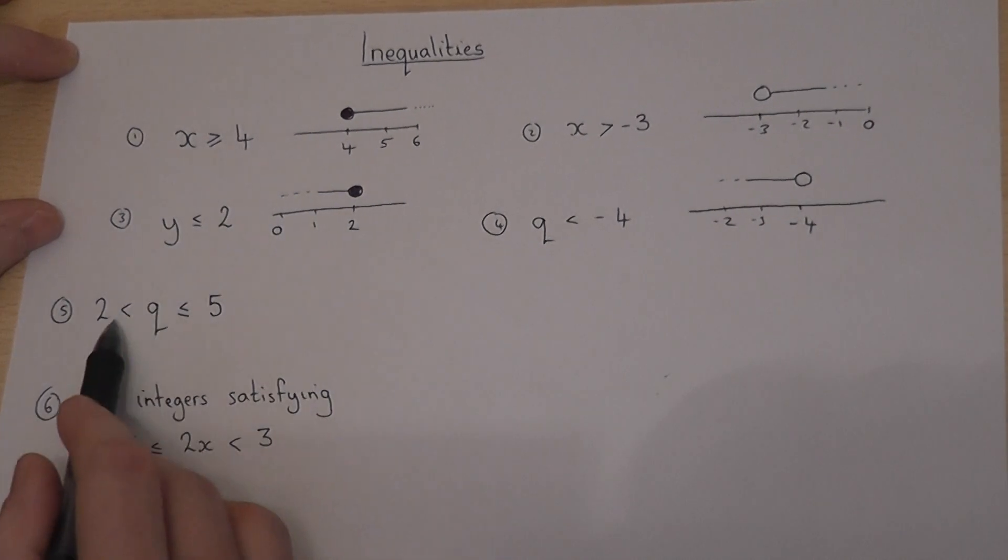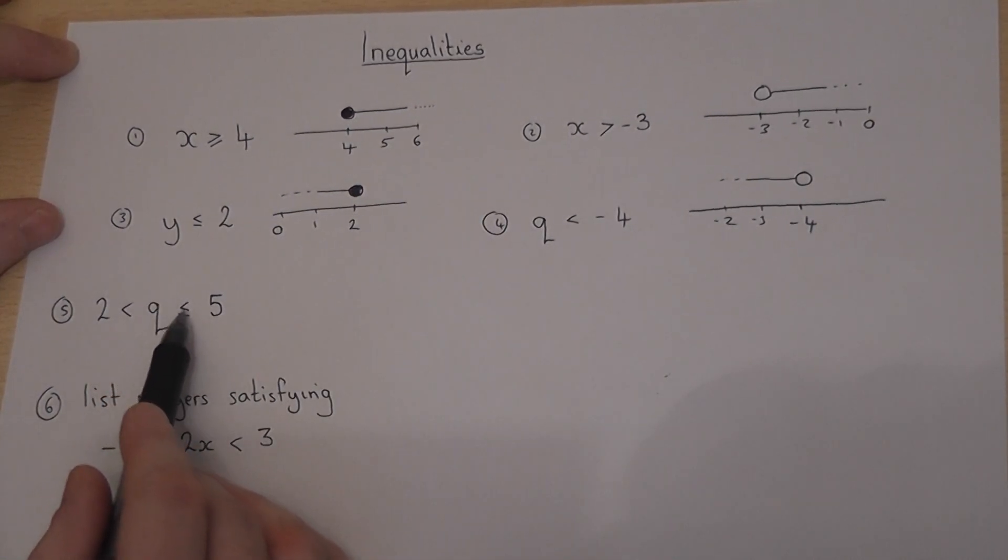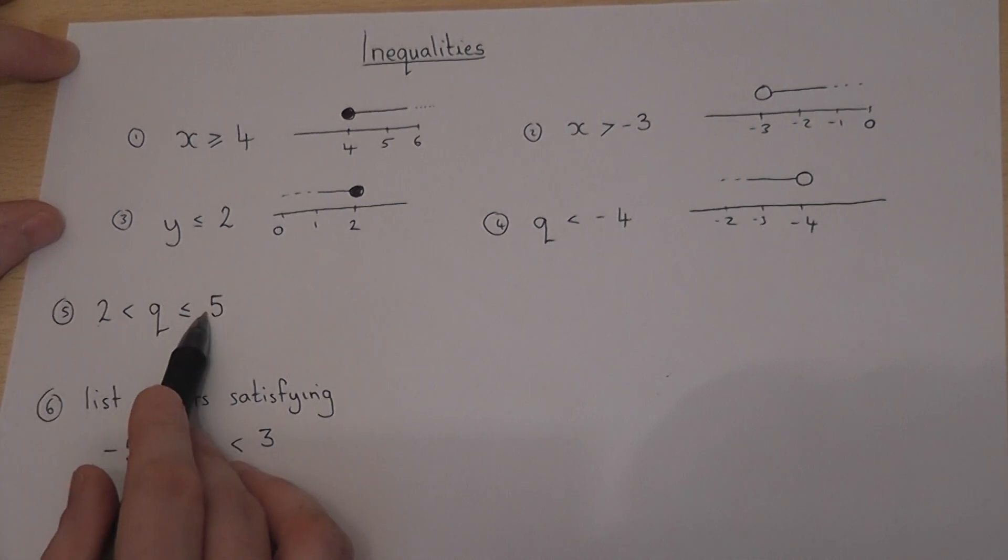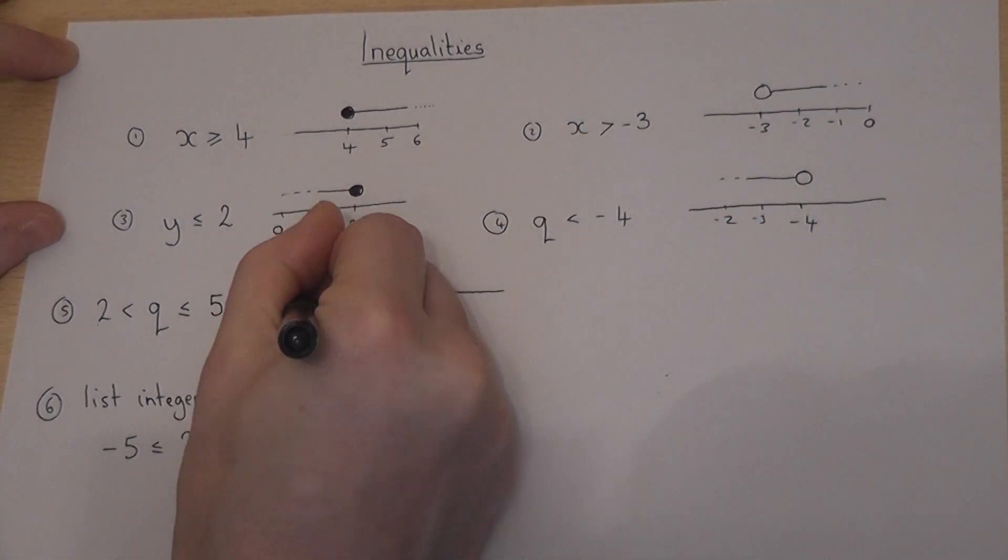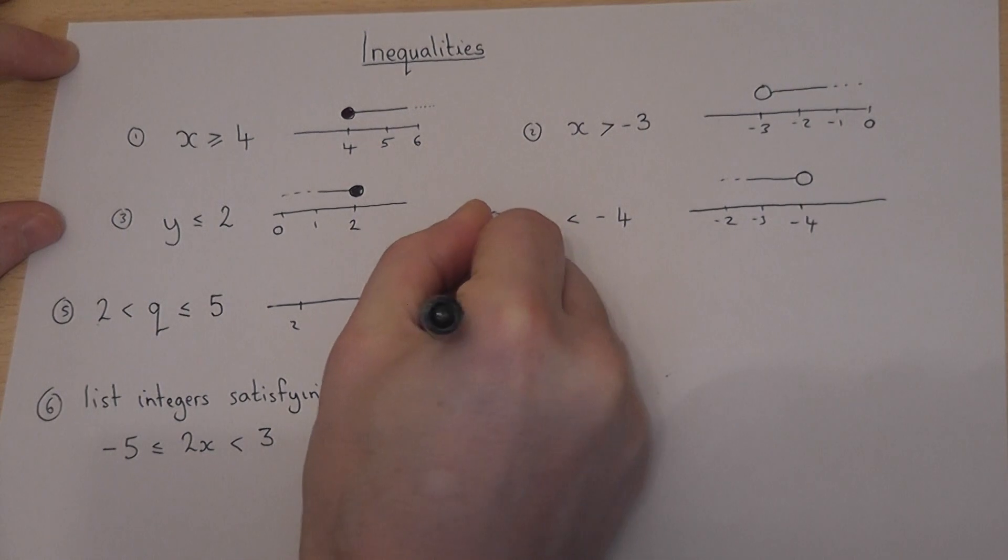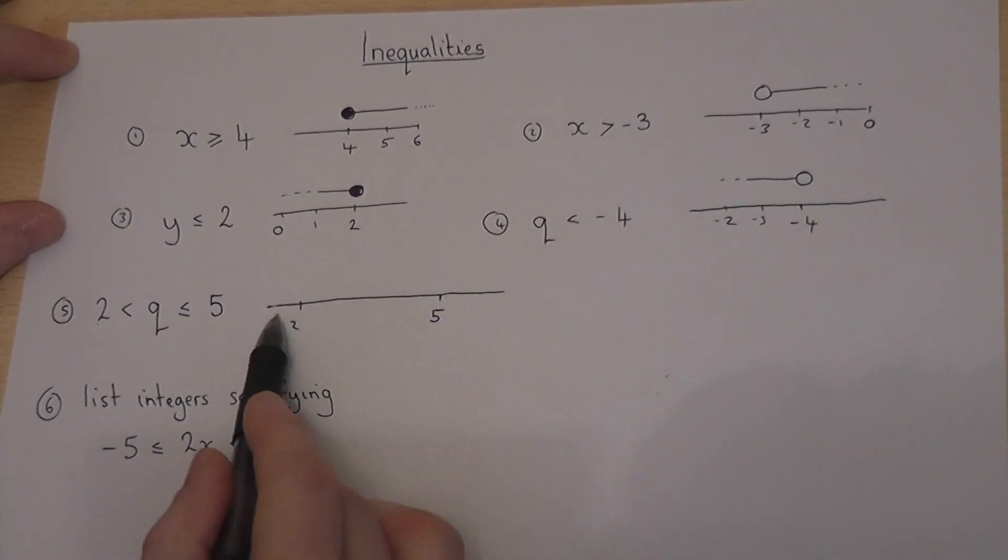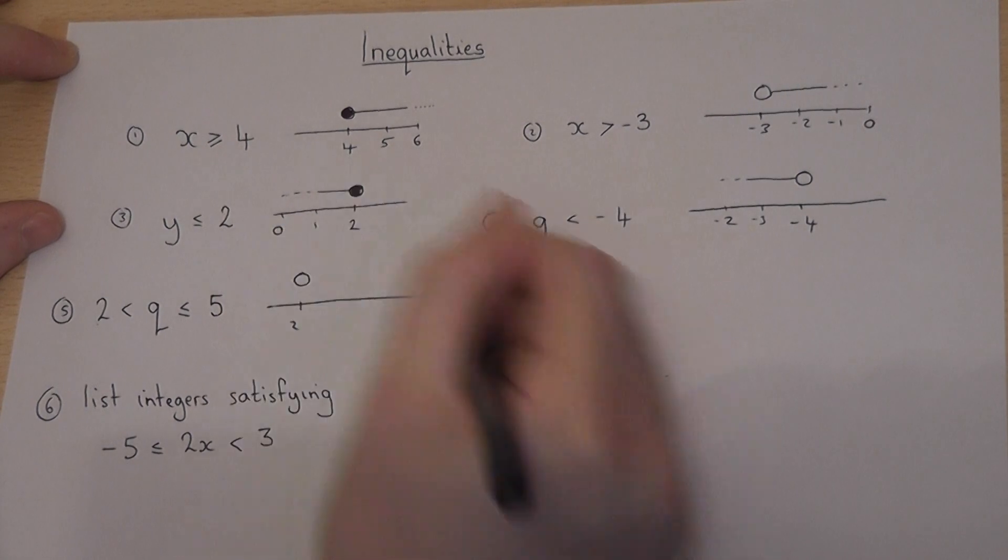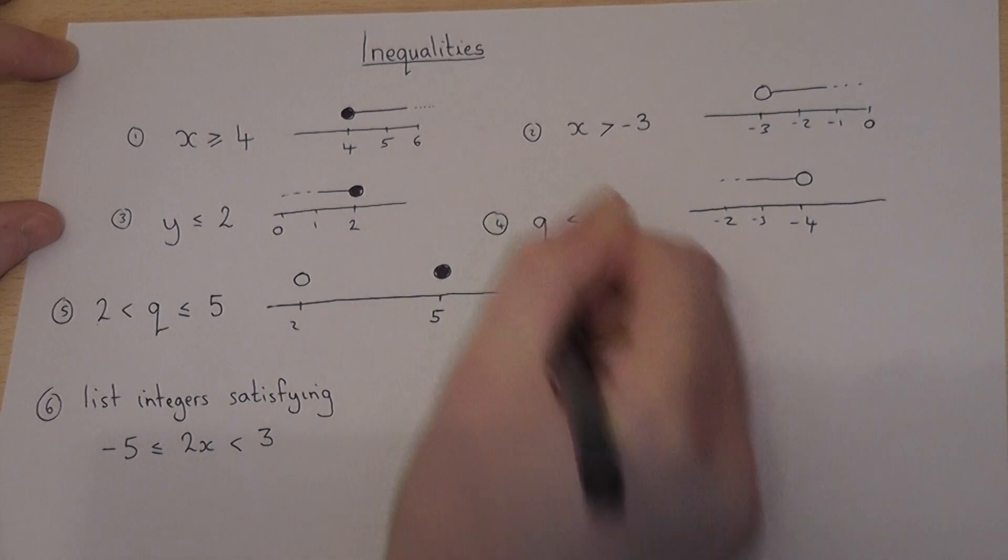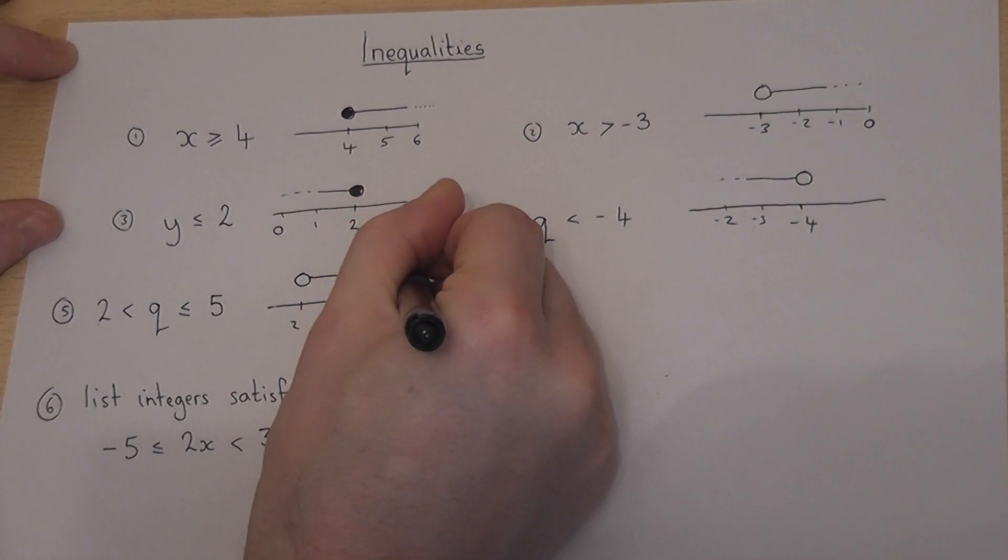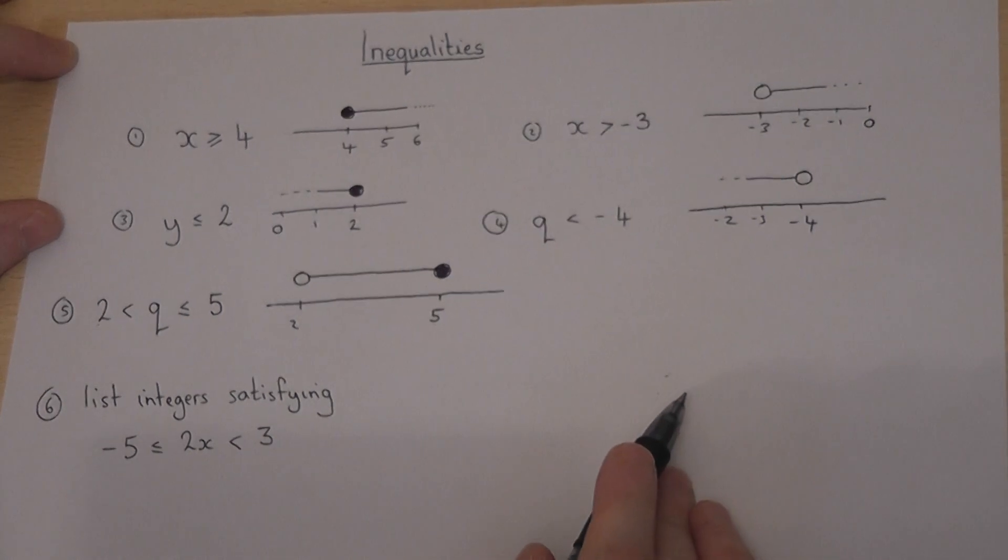Now we can also have double inequalities where a certain unknown value is bounded by two other values. So q is between 2 and 5, but we cannot include 2, but we can include 5. So if I draw a number line and put 2 here and 5 here, then q is anywhere in between there. But we don't include 2, so we use an open circle. We can include 5, so we close it. And then we put a straight line across to join the two circles.